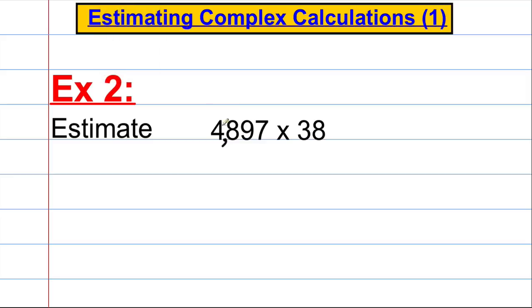So the first step is we round everything to one significant figure. The 4 in the 1,000's column indicates the first significant figure. And the 3 in the 10's column indicates the first significant figure in the next number. And what we're going to do is we're going to round each of these numbers to one significant figure. So the nearest 1,000 to 4,897 is clearly 5,000. And the nearest 1,000,